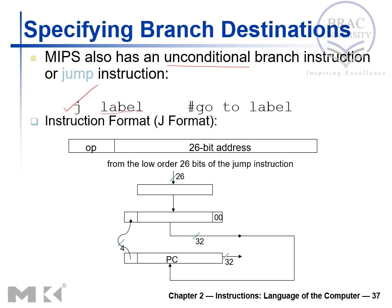In a jump instruction we have a label, and we do not compare the values in registers like we did with the branch instruction. With branch, we compared whether registers are equal or not equal, and based on that result we decided whether to branch or not. But with jump, when the assembler sees this instruction, it directly jumps to the label, that is, the given memory address — though this is not entirely straightforward and involves some calculation.